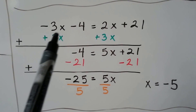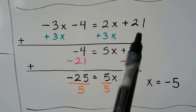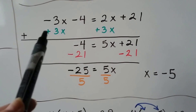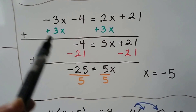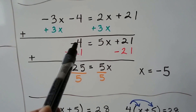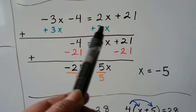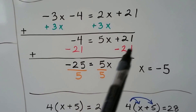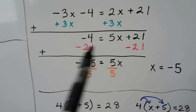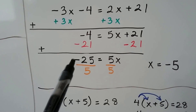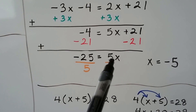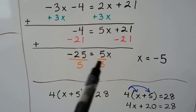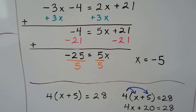We've got negative 3x minus 4 equals 2x plus 21. We can add a 3x to each side of this equation. That'll create a zero pair here and we'll be left with negative 4. When we add the 3x over here, we get a 5x plus 21. Now we can take the 21 away from both sides — we're going to get negative 25 equals 5x. We divide both sides of this equation by the coefficient 5 and we get x equals negative 5.